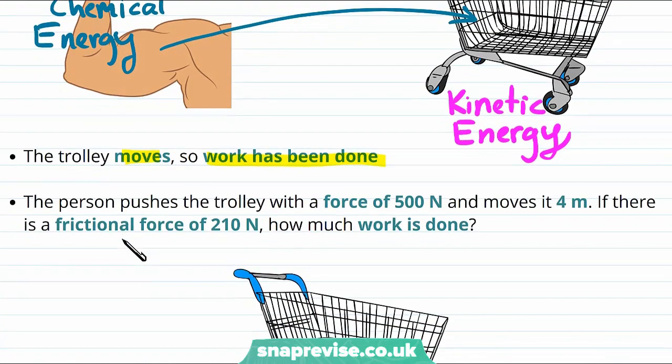Let's look at some numbers now. If the person pushes a trolley with a force of 500 Newtons and it moves 4 meters, and if there is a frictional force of 210 Newtons throughout, how much work is done over the 4 meters?